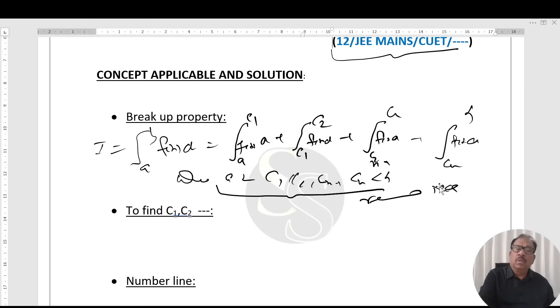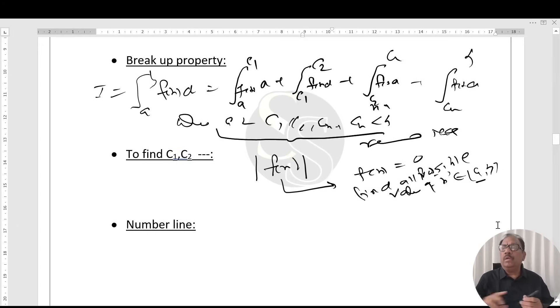To find c1, c2 when modulus function is given, put f(x) equal to 0 and find all possible values of f(x) in between a and b. On the number line, put a, c1, c2, cn. Pick up the given function. On simplification, if we get positive sign put positive sign, if we get negative sign put negative sign, and similarly go on.